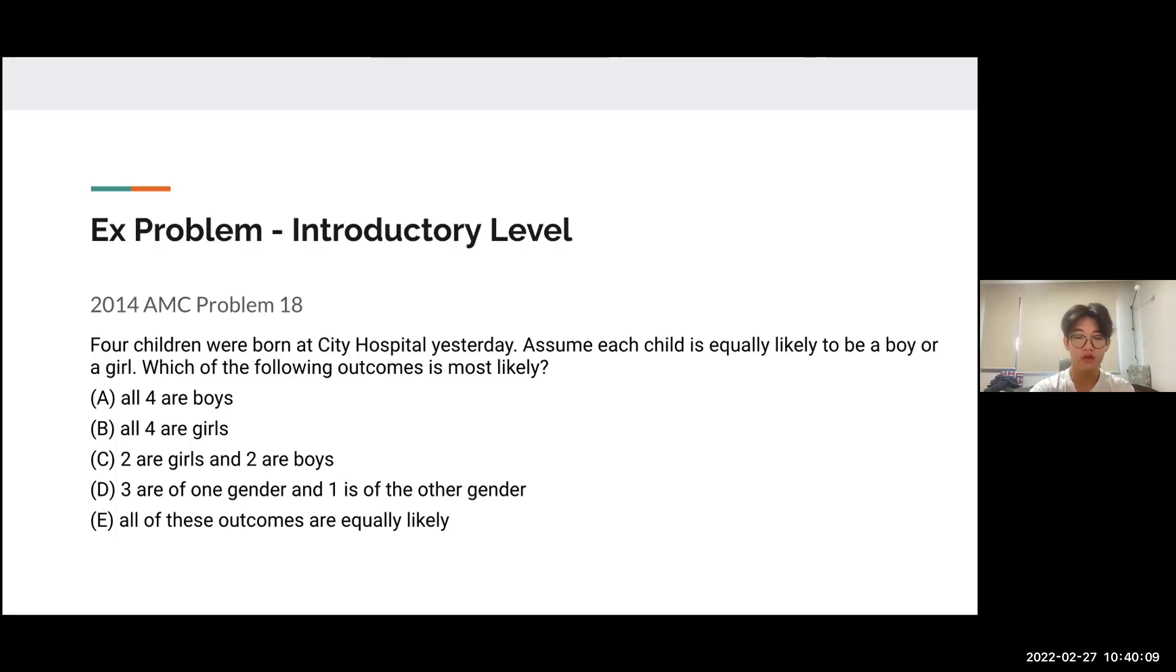You might think calculating the probability of each scenario would be hard. But since the problem tells us each child is equally likely to be born either gender, this is a major hint we can use to solve this problem.